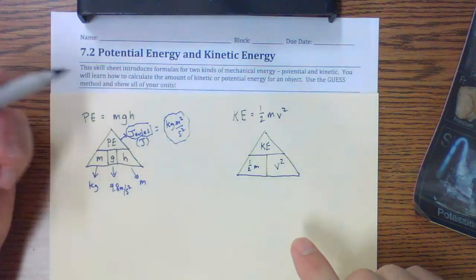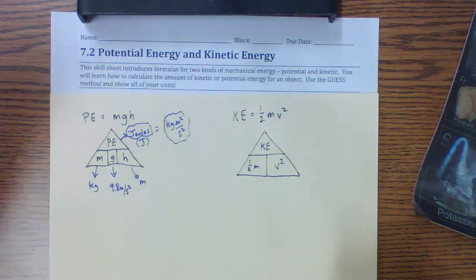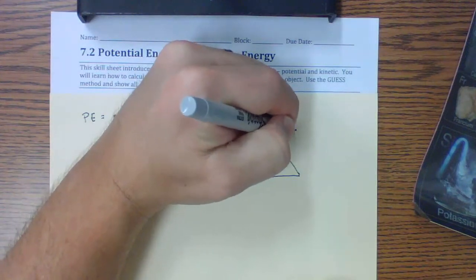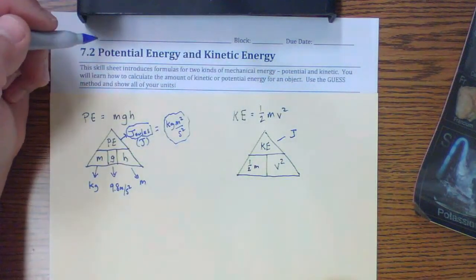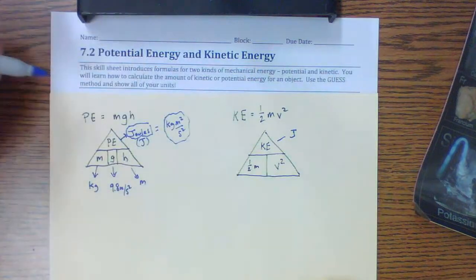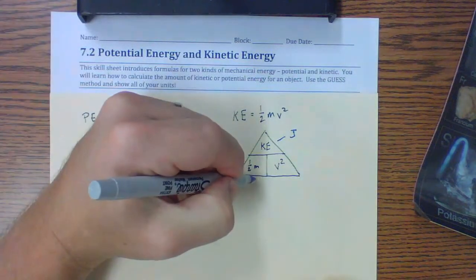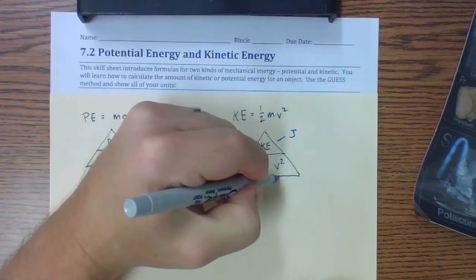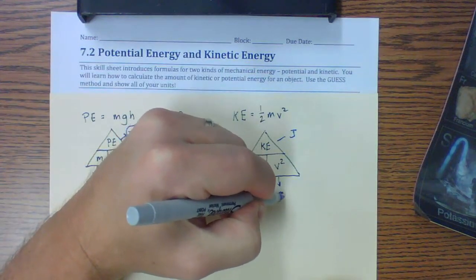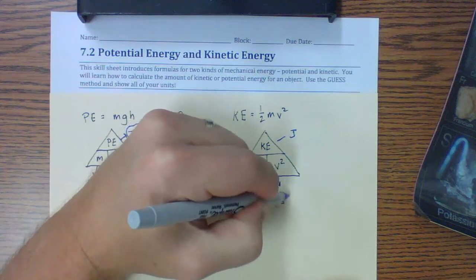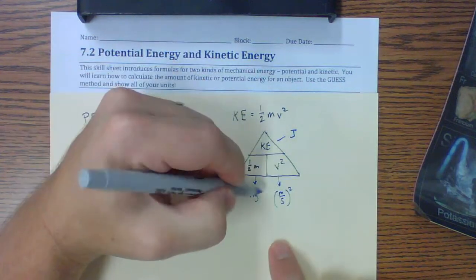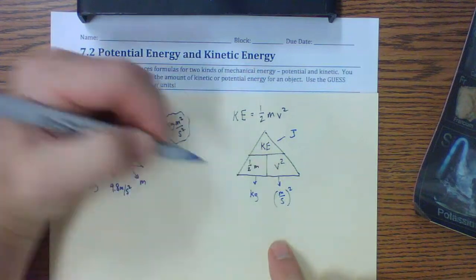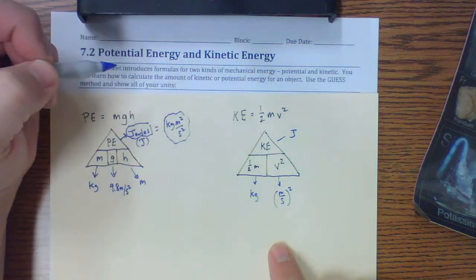From a units point of view, kinetic energy is also measured in joules because energy is still energy. Mass is in kilograms, and velocity is in meters per second — but we're squaring that. So we get kilograms times meters squared per second squared, which is the exact same units as potential energy.